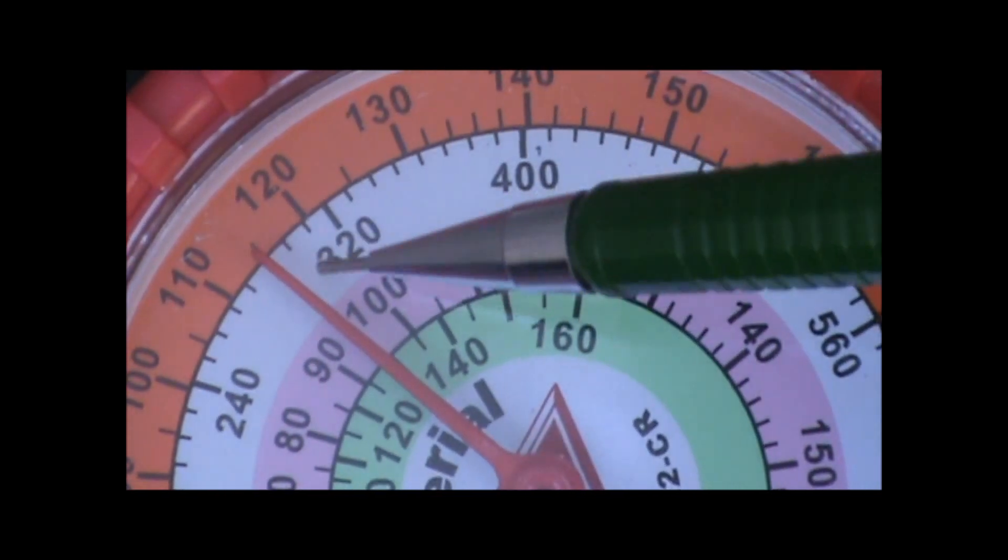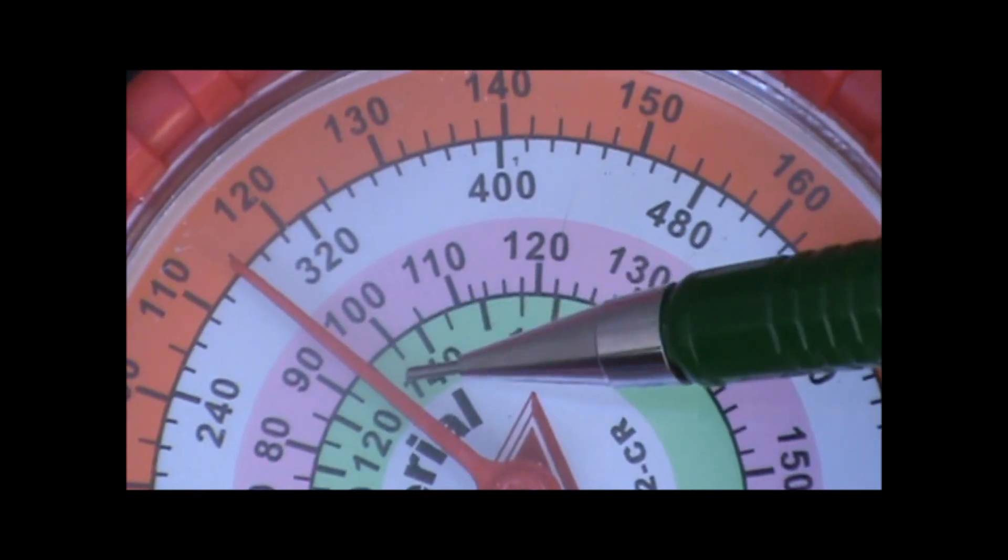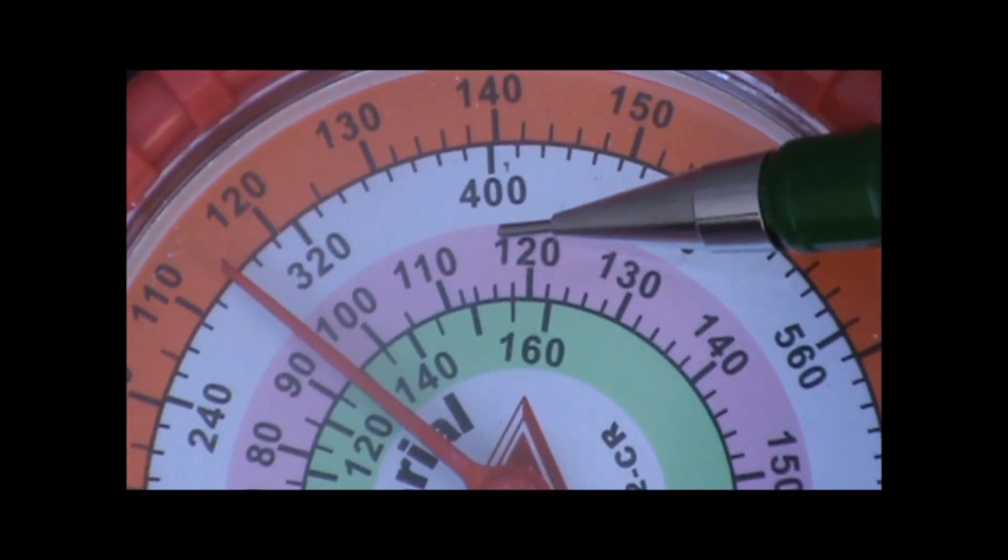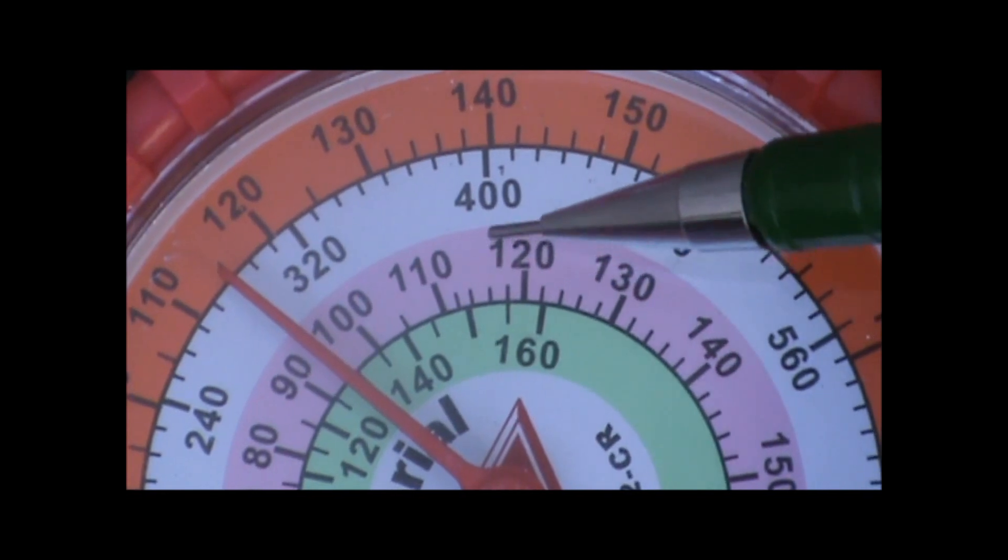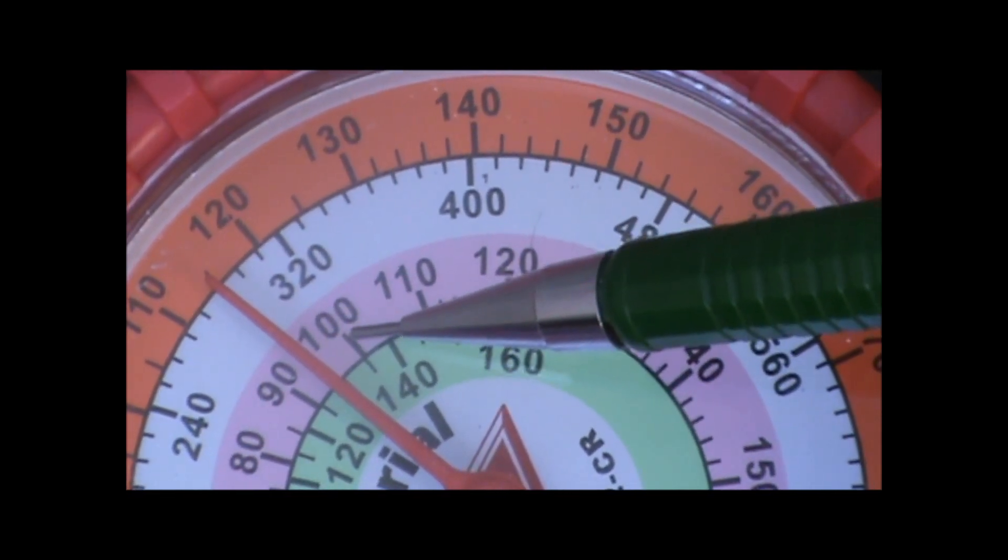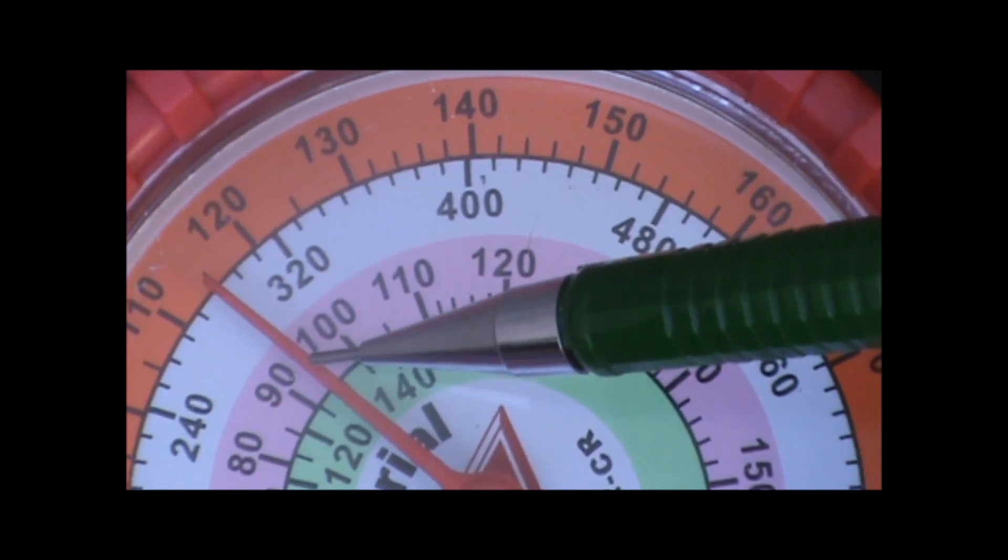Here's our high side pressure gauge. What you're going to want to look at is where the indicator crosses the pink ring, so you can read the saturation temperature of the refrigerant. It's crossing at about 93-94 degrees. Can you see that right there?